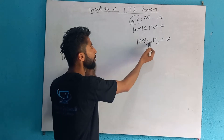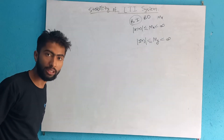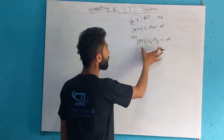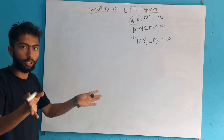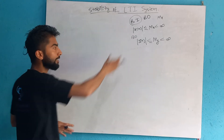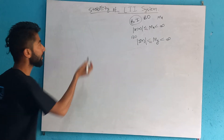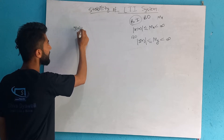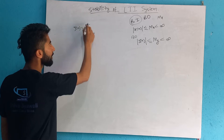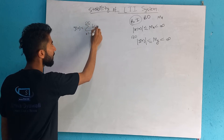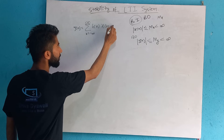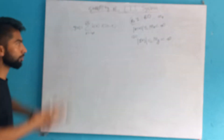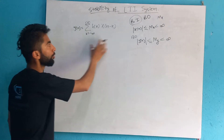In order to get this input, the bounded output will be given as bounded output, whereby if the bounded output is given, this system is stable. Now if you can see this system which is stable, the formula is: y of n equals the sum from minus infinity to infinity of h(k) times x(n-k). It is the LTI system convolution sum.